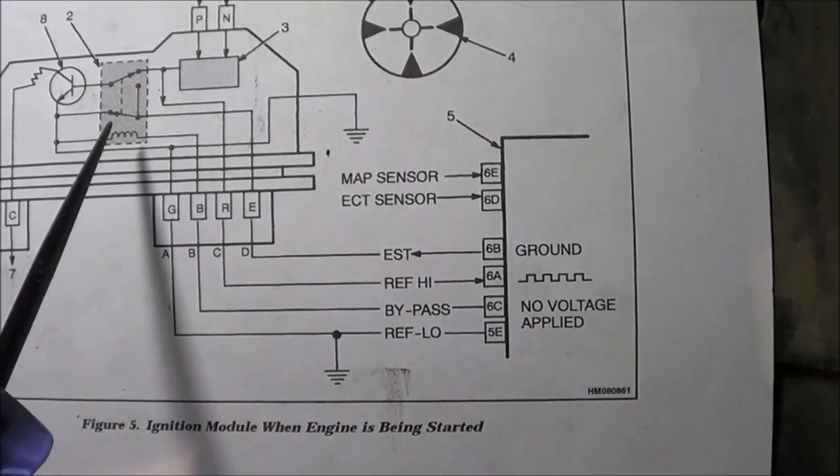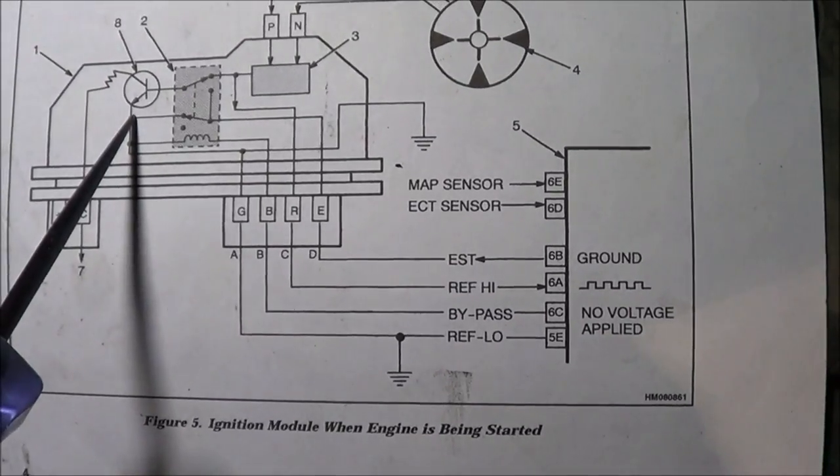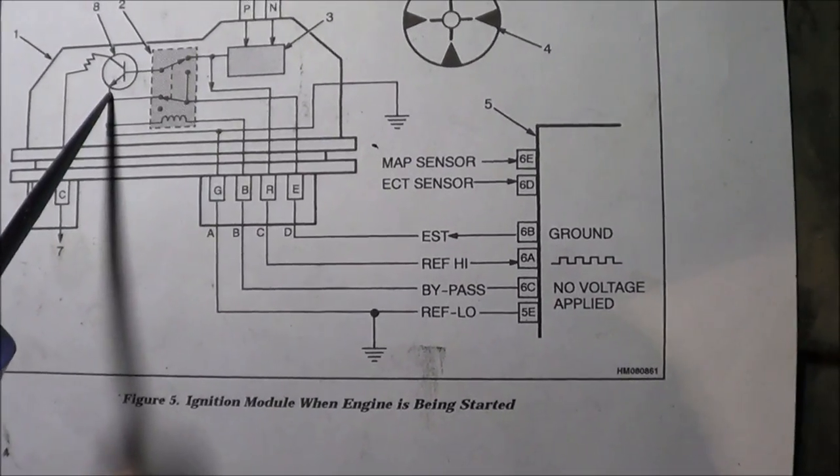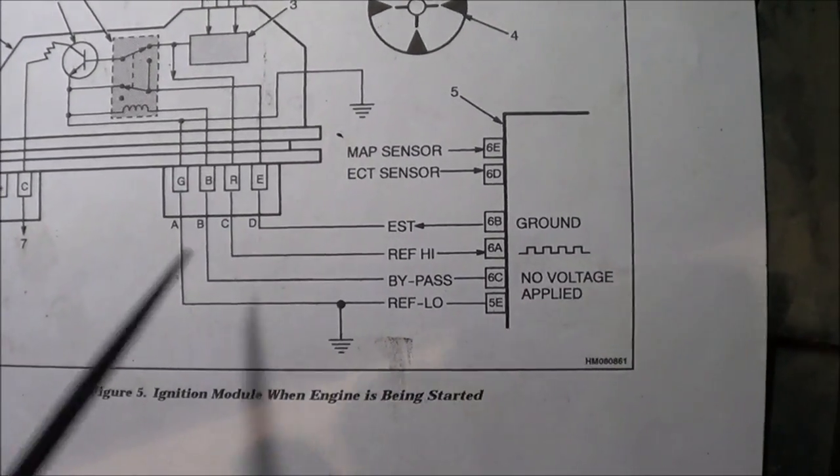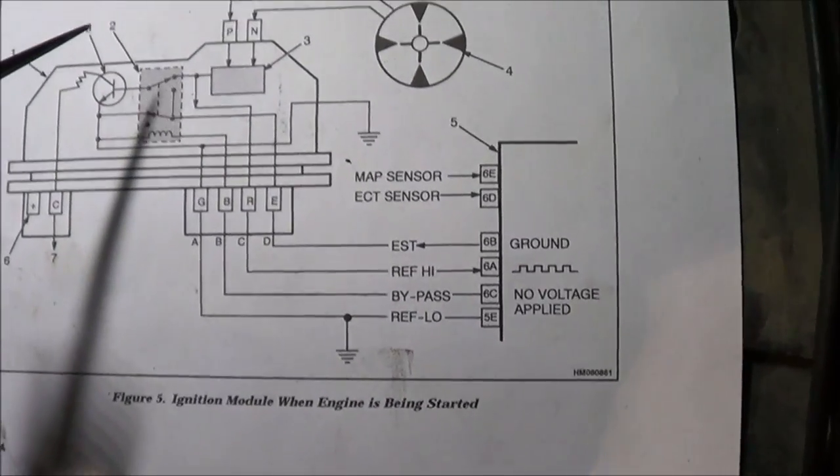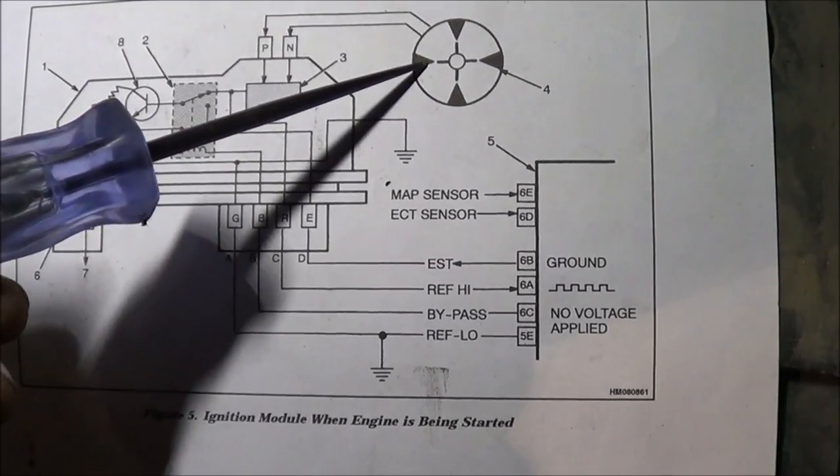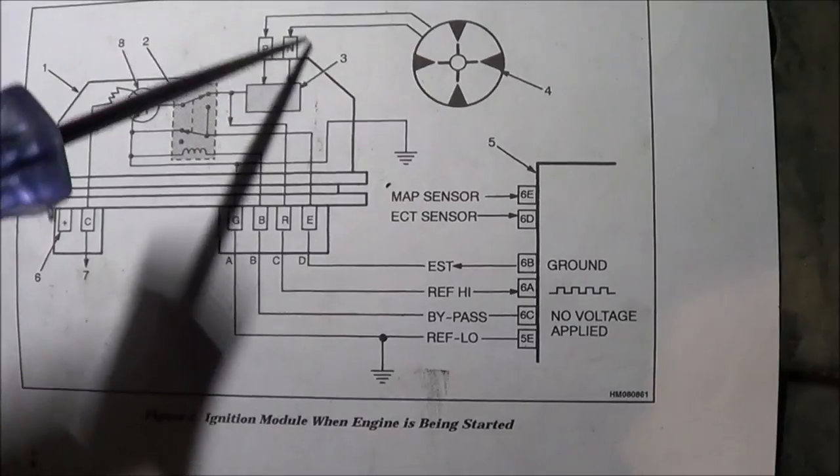Through this line right here which says EST, once the engine reaches more than 400 RPM, it's going to be in control of the spark timing through that transistor. So how does it get the RPM? It's going to be from the reluctor in the distributor.